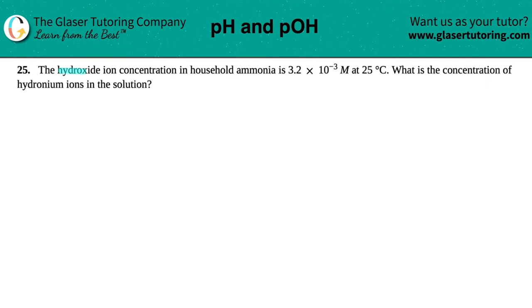Number 25. The hydroxide ion concentration in household ammonia is 3.2 times 10 to the negative 3 molarity at 25 degrees Celsius, and then what is the concentration of the hydronium ions in the solution?